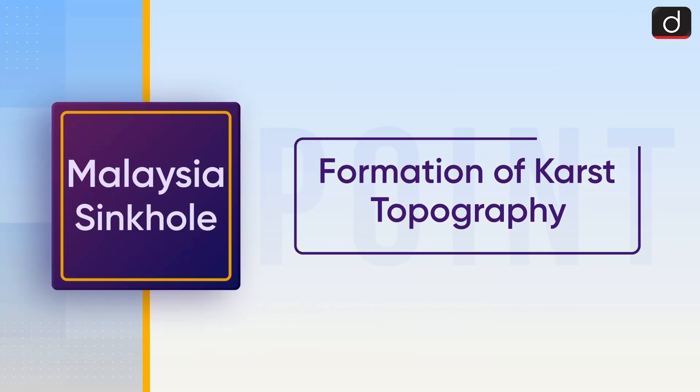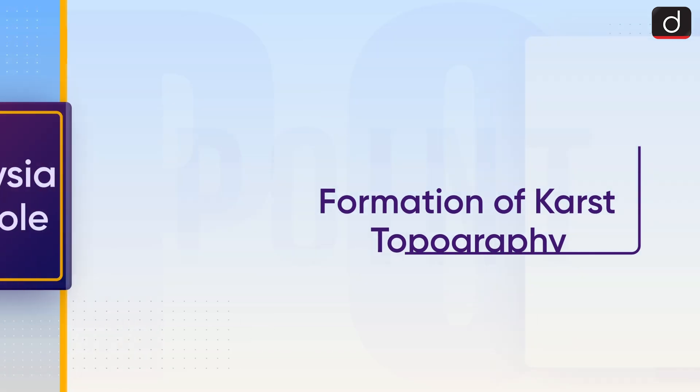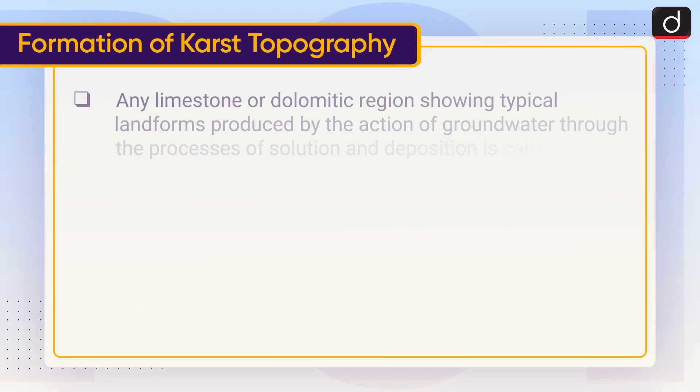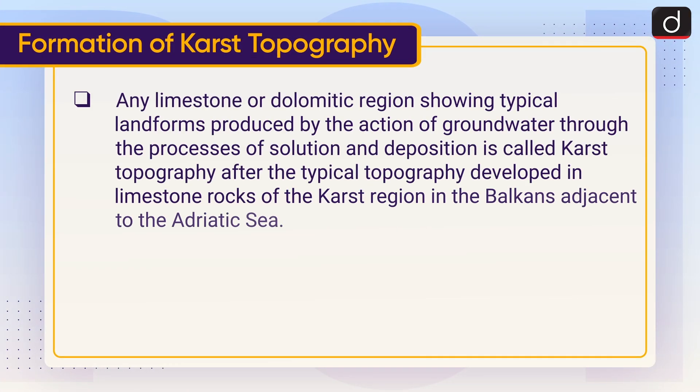Now let us talk about the formation of karst topography. Any limestone or dolomitic region showing typical landforms produced by the action of groundwater through the processes of solution and deposition is called karst topography, after the typical topography developed in limestone rocks of the karst region in the Balkans.